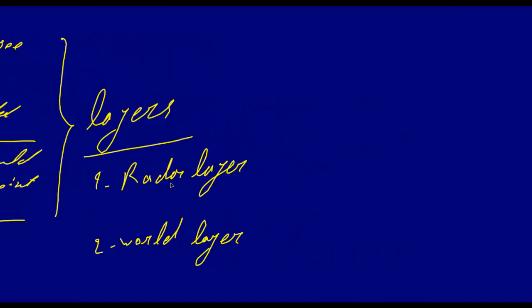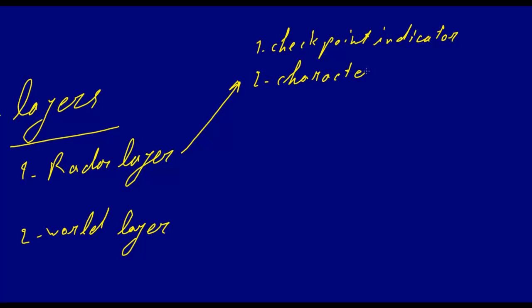And the things we will see in these layers, in the radar layer, we'll have the checkpoint indicator, character indicator, and the next one will be the map and anything we need to be seen in radar camera.